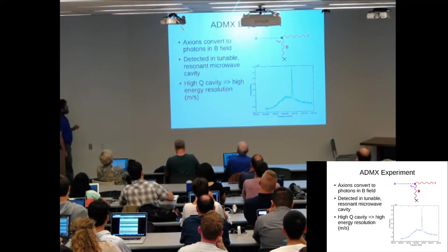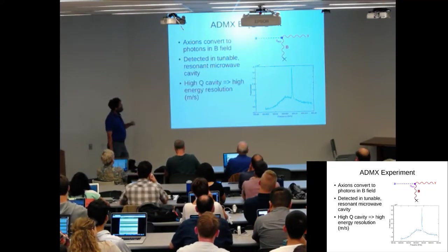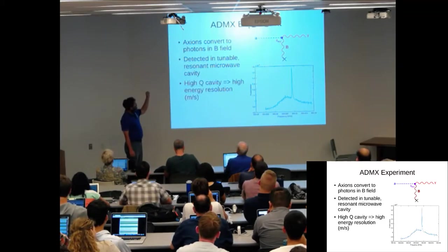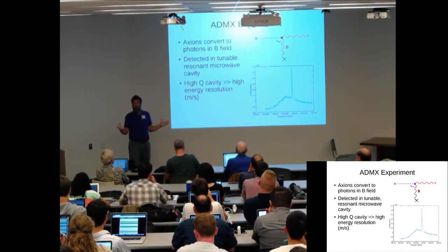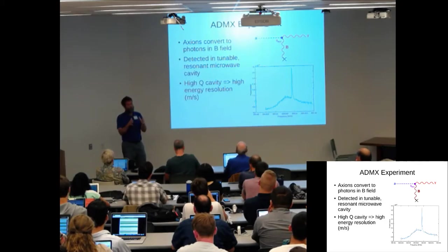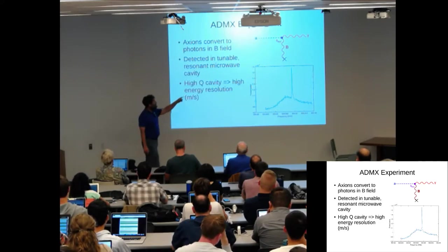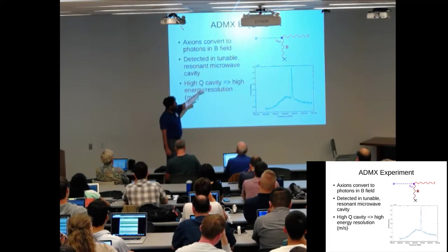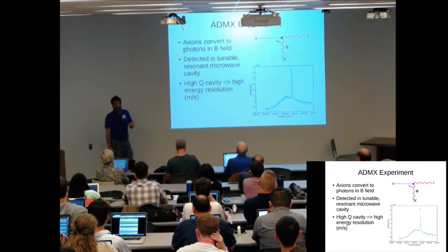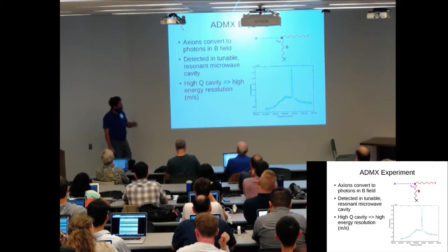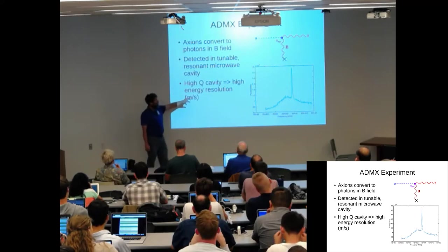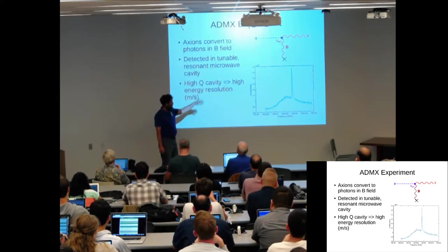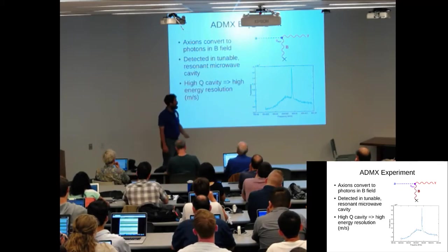Let me tell you about how the detector works. There's basically a two-photon interaction, and one of the photons is provided by a several-Tesla magnetic field. Inside that magnetic field is a very cold microwave cavity. You detect the outgoing gamma as a microwave photon, which you can measure with a very sensitive amplifier. The cavity is very high-Q, so that if you detect an axion, it will produce a very narrow signal.